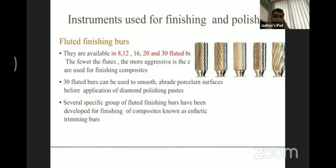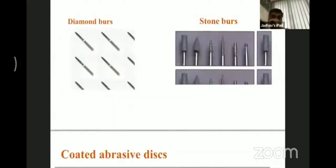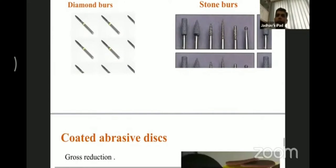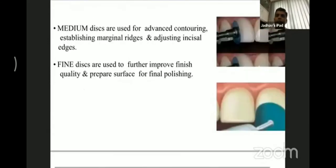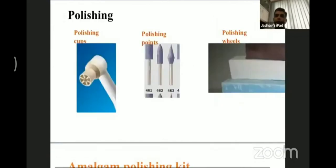Diamond burs are abrasive points available in different forms and attachments, and they come at both low and high speeds. Coated abrasive discs using aluminum oxide are for gross contouring, and medium and fine flexible discs are available for composite restoration finishing. For finishing and polishing, different cups, pumice paste, polishing pastes, wheels, and finishing points in different shapes are also available.